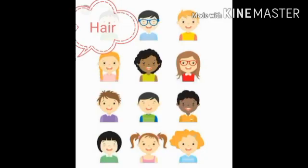Hair: as we look at people around us, we get to see different types of hairstyles. The color, texture, and length of the hair, as well as the haircut, greatly differentiate one person from another.